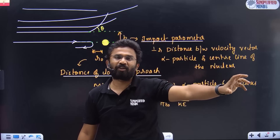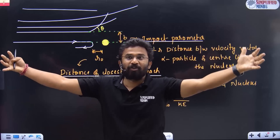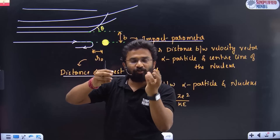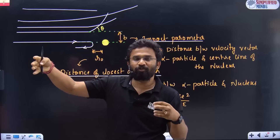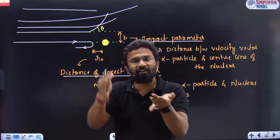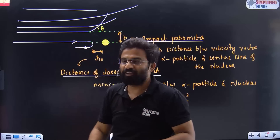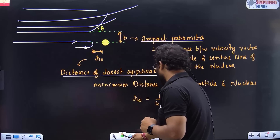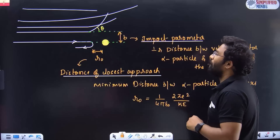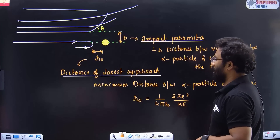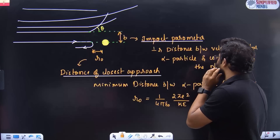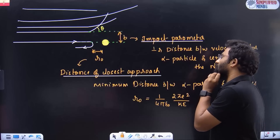There is a movie called Ant-Man — that opening scene demonstrates this concept. Atom is mostly space. Based on that, we have two important terms: impact parameter and distance of closest approach.